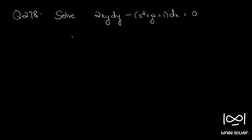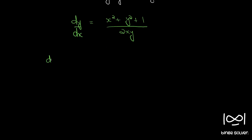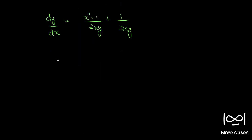We will first extract dy/dx from this. dy/dx is equal to (x squared plus y squared plus 1) divided by 2xy. Rearranging, we can get dy/dx minus 1/(2x) times (1/y) equal to (x squared plus 1)/(2x).